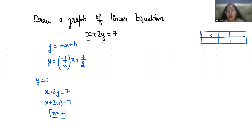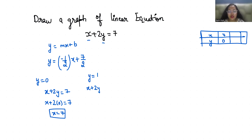So that's the x-intercept. Now we are going to apply the trial and error method to find at least three pairs of x and y. I am going to put y as 1: x plus 2 times 1 equals 7, so x equals 5. When y is 1, x is 5.